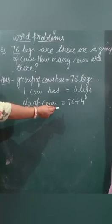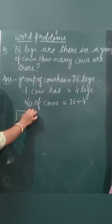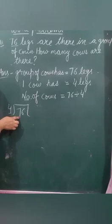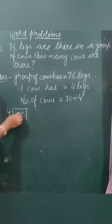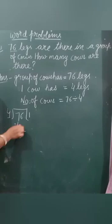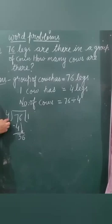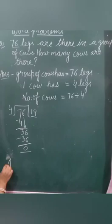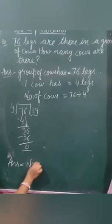Now we calculate. 76 divided by 4. Now you have to count the table of 4 till we get 7, the first digit. Why first digit? Because 7 is greater than 4. So 4 ones are 4. Subtract it. 7 minus 4 we get 3. 6 will come down. Now it becomes 36. 4 nines are 36. Subtract it. We get 0. So the answer is, number of cows is equal to 19.